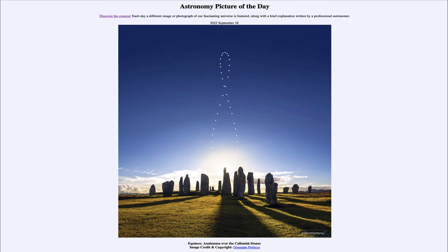What we are looking at up in the sky is an analemma, and that is the position of the Sun over the course of the year when taken at the same time of day. We can label this here for you, and you can see the dates as to when each image was taken — from June 23rd at the very top, down into December at the very bottom. The analemma occurs when you take a picture of the Sun at the identical time every single day.